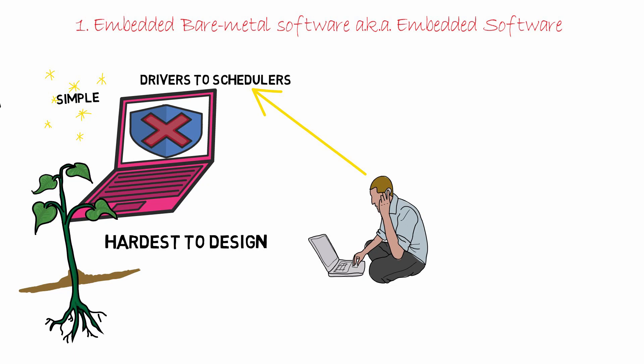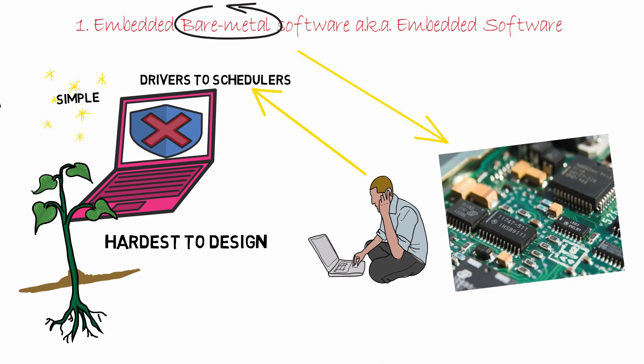It is called bare metal because the software we write runs directly on the chip by manipulating the control registers and reading the status registers. Also, since the entire code is written for a specific application, the resulting system will be much more responsive and efficient compared to the other systems.